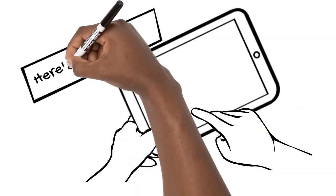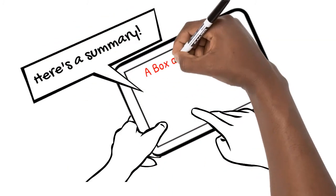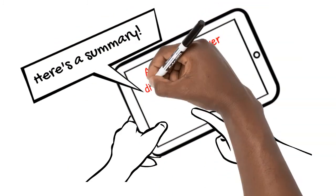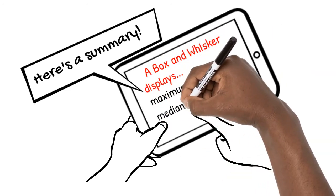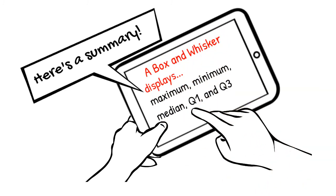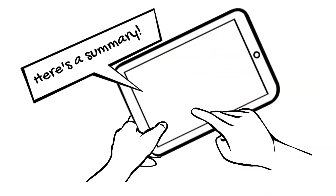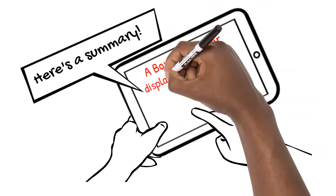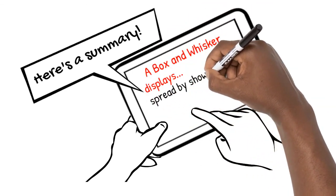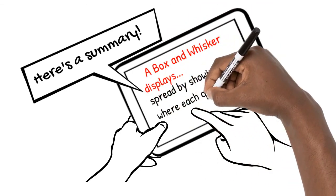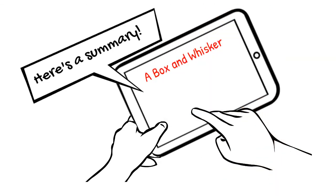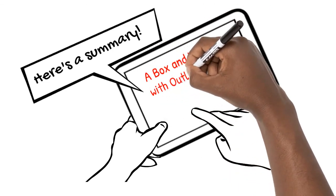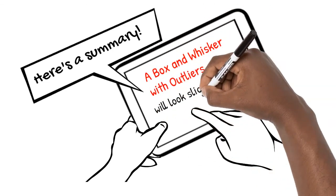Here's what we've learned in this video. A box and whisker displays the maximum, minimum, median, lower quartile, and upper quartile. A box and whisker displays the spread showing where each quartile lies. A box and whisker with outliers will look slightly different. We'll see you next time.